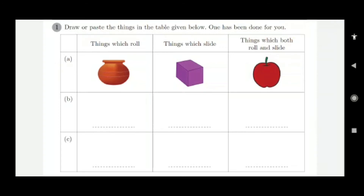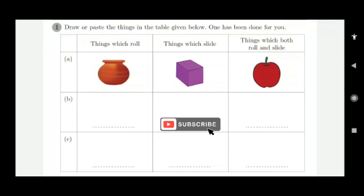The first one is done for you. Things which roll — a pot can roll. Things which slide — a box is given. Things which both roll and slide — an apple is given, because an apple can both roll and slide.